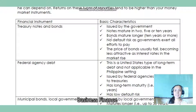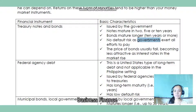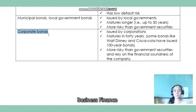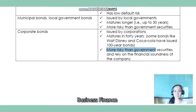There is no default risk for treasury notes and bonds because the government exerts all efforts to pay — they are default-free financial instruments backed by government funds. The price of bonds usually falls and becomes less effective as interest rates in the market rise. Next, corporate bonds — from the word itself — are bonds issued by corporations. They can mature in up to 40 years for some companies. They are riskier than government securities and rely on the financial soundness of the company; if the company is financially sound, it is less risky.